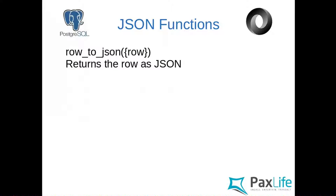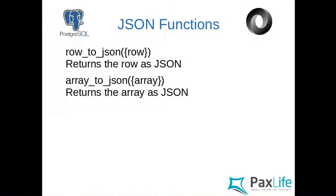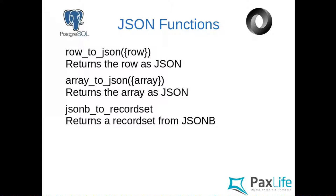Now let's look at the JSON functions available. The row_to_json function does exactly what it's named — you do a usual SQL statement and return the complete result with each row as JSON, with just one function. Postgres also has arrays, which makes life easier inside the database. You can export arrays as JSON with just one function call. JSONB_to_recordset is the opposite — you can return JSONB as SQL data and work on it again like regular tables.